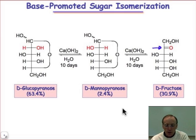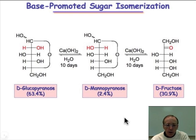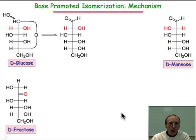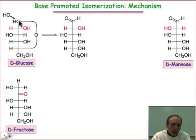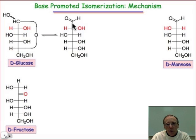What's the mechanism by which this process takes place? As you might guess, it also involves the open chain form. So if we begin with D-glucopyranose, the hemiacetal form shown here — there's the anomeric carbon, it's the only carbon with two oxygens bound to it — it opens up into the aldose.